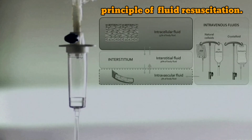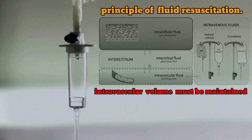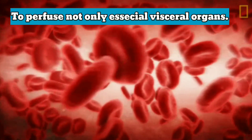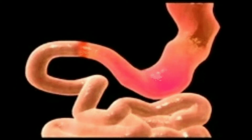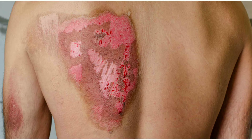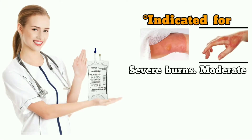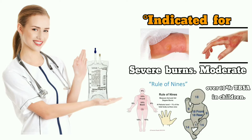The principal of fluid resuscitation is that the intravascular volume must be maintained following a burn in order to provide sufficient circulation to perfuse not only the essential visceral organs such as brain, kidney, and gut, but also the peripheral tissues, especially the damaged skin. For moderate and very severe burns, in children with burns over 10% TBSA and adults with burns over 15% TBSA, consider the need for intravenous fluid resuscitation.